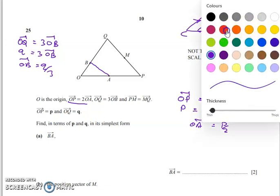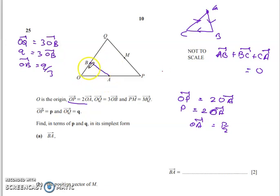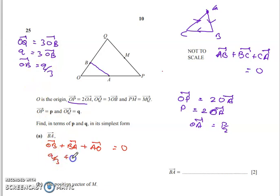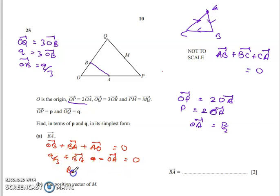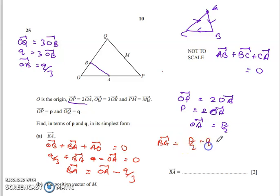To find BA, consider: OB + BA + AO = 0. We know OB = q/3 and AO = −OA = −p/2. So BA = −OB + OA = −q/3 + p/2. Therefore BA = p/2 − q/3.